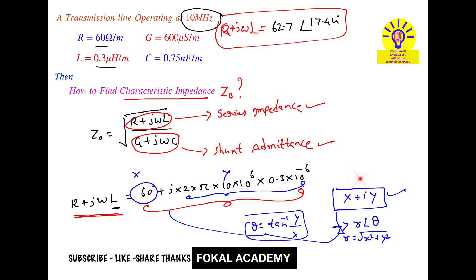Now, similarly, we'll find the shunt admittance, which is G + jωC. G equals 600 microsiemens (micro means 10⁻⁶), plus j times 2πf, where f is 10 megahertz (10 × 10⁶), times C, which equals 0.75 nanofarad (nano means 10⁻⁹).